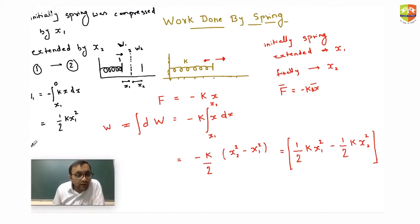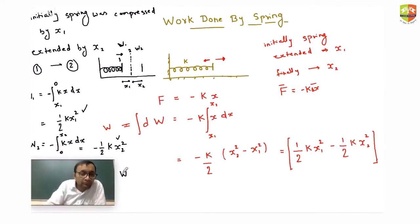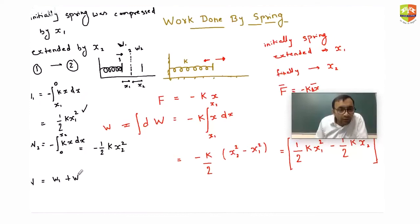For W2, work done is minus the integral of kx dx with x going from 0 to x2. This gives W2 equals minus (1/2)kx2². So total work done W equals W1 plus W2, which is (1/2)kx1² minus (1/2)kx2².